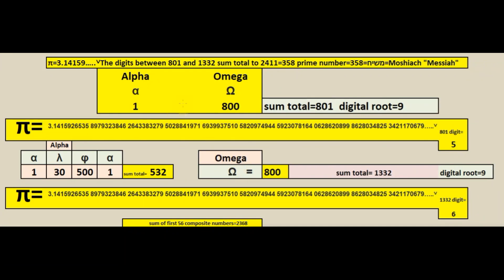Cracking pi to discover the Creator of it all, Jesus Christ, the Alpha and Omega, having a Greek sum total of 801, having a digital root value of 9.